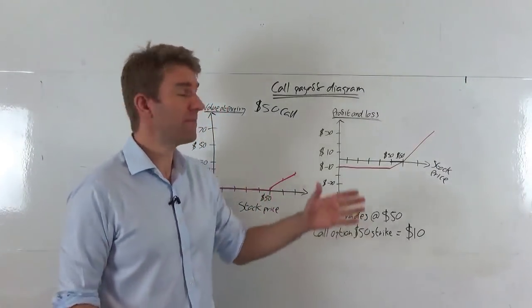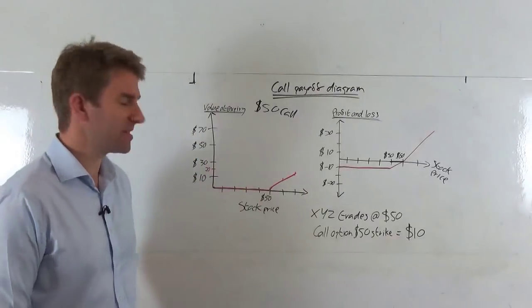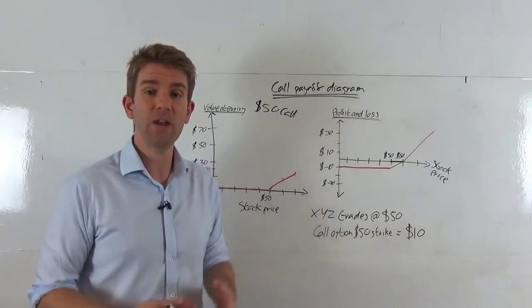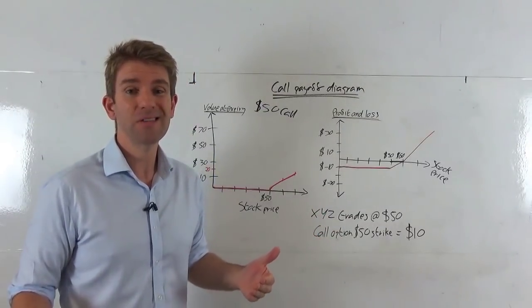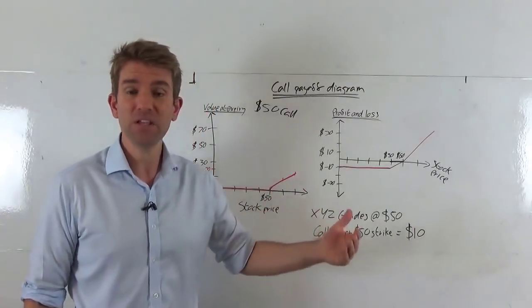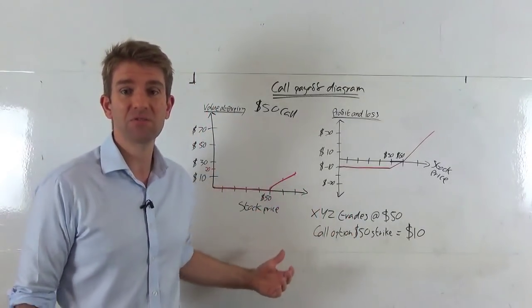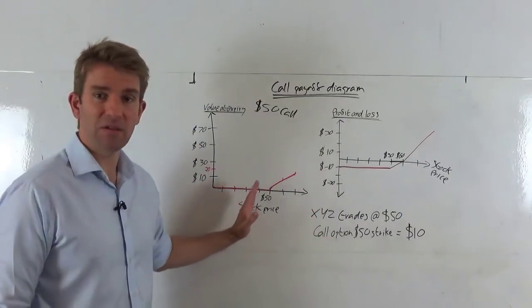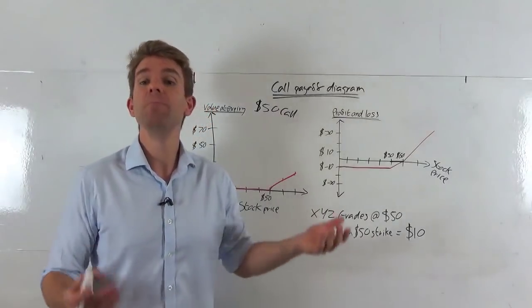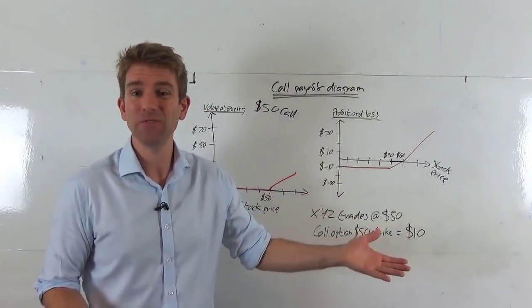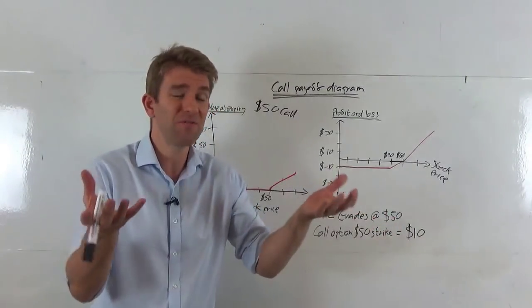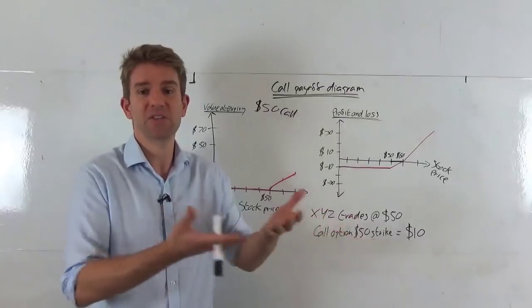So what does that mean in this diagram? The value at expiry works like this: if the stock price is $10 at expiry, has the option got any value? No, because you've got the right to buy those shares at $50 when it's actually trading at $10 — that's no use at all. Same at $20, $30, $40. At $50, it's still no real value, because you can buy it at $50 in the market anyway.